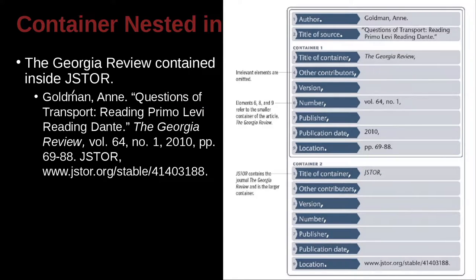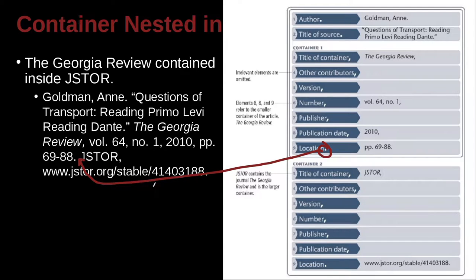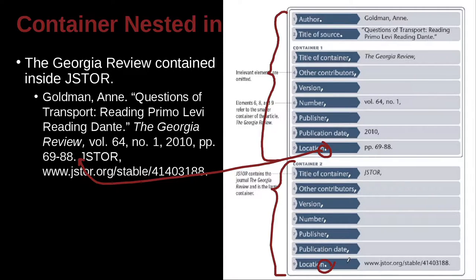So in this example: Goldman Ann, 'Questions of Transport: Reading the Primo Levi Reading Sante,' the Georgia Review, Volume 64, Number 1, 2010, pages 69 to 88, inside JSTOR. This period here is this period here — that is author, source, the container, over. Usually we'd end there, but you could have more. How would you have more? You have a second container. And what do you do at the end of that second container? You have a period, and in between everything else is a comma.